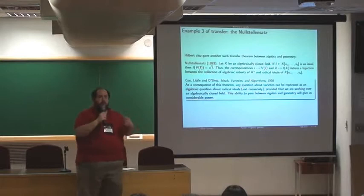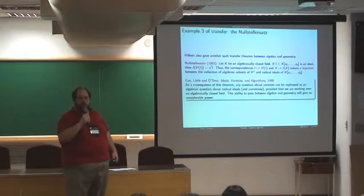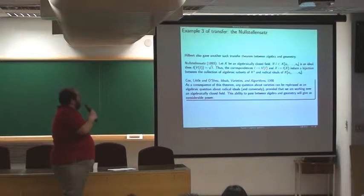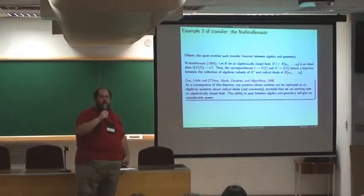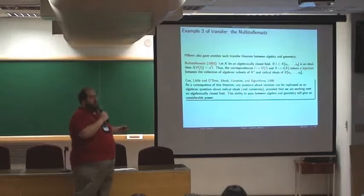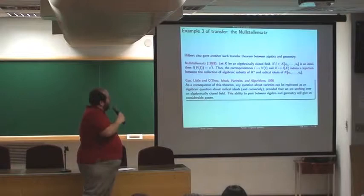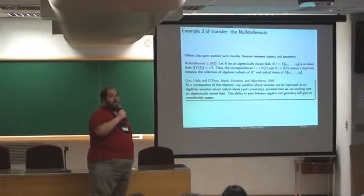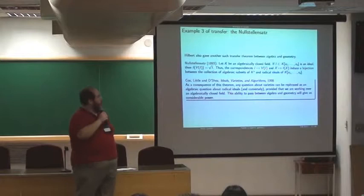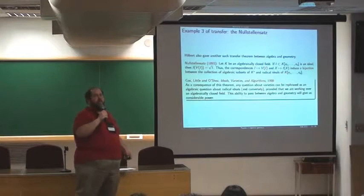The third example that I want to spend a little time on maybe looks a bit more forbidding from the start. So, this is another result of Hilbert's called the Nullstellensatz. The example, I can read you, but this probably looks just garbled to many of you. I'll walk you through it a little bit, but for the time being, the super essential details are that it is an example of transfer. So, in particular, the result says this is in a more modern formulation than the one that Hilbert initially shows, but not too modern.